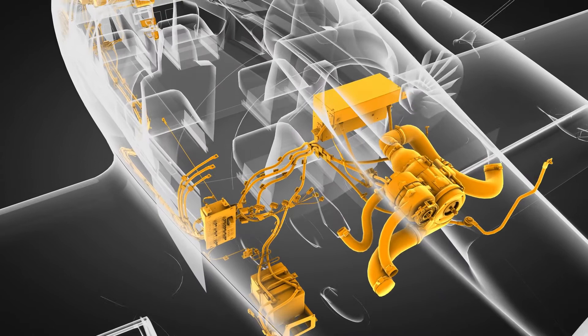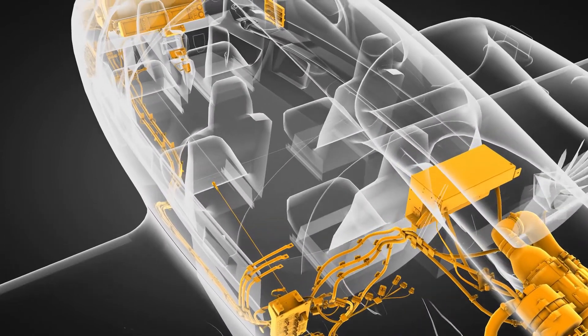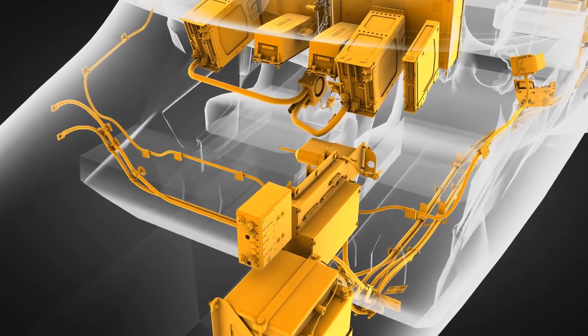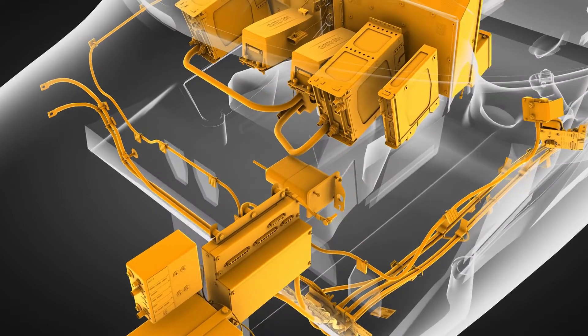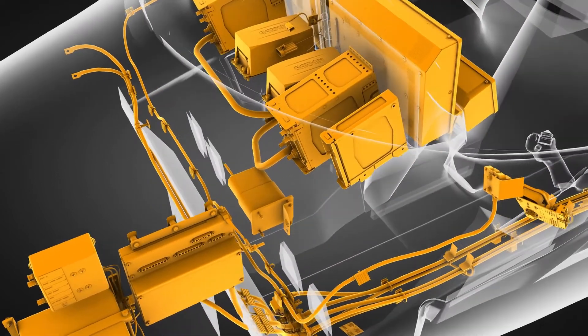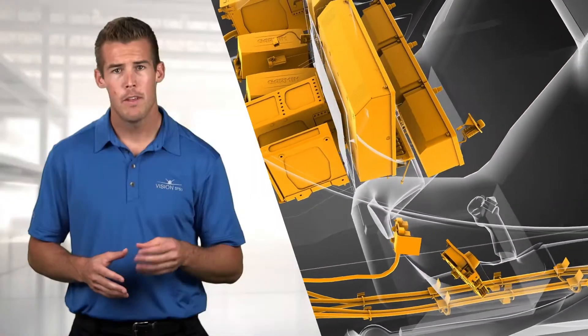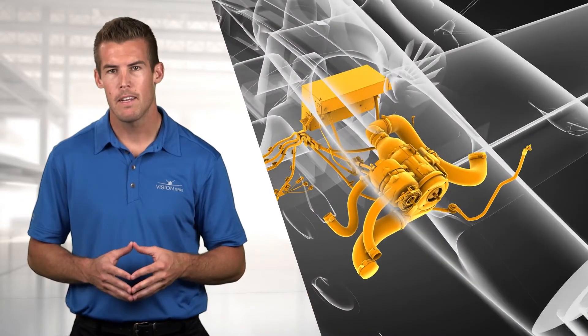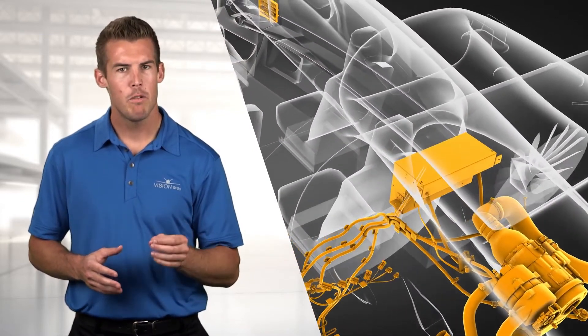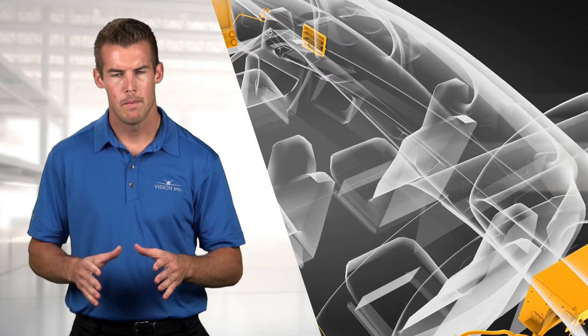The answer is redundancy. As you'll see in a moment, the Vision SF50 electrical system is designed to gracefully and automatically degrade as necessary in the event of an electrical fault. This reduces workload for the pilot and ensures essential equipment is always powered.